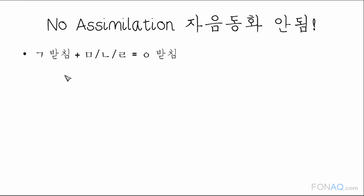In Korean pronunciation, when ㄱ 받침 is followed by a consonant like ㄴ or ㄹ, it becomes ㅇ 받침. This phenomenon is called consonant assimilation, or ㄱ 동화.